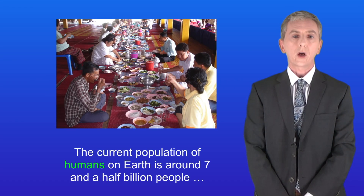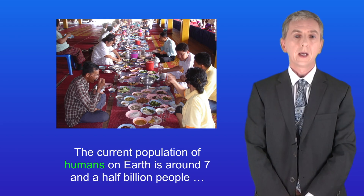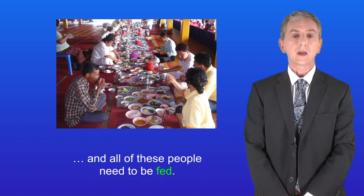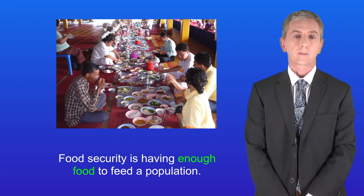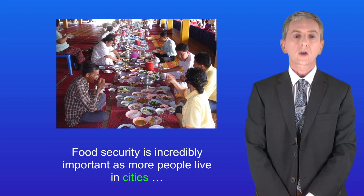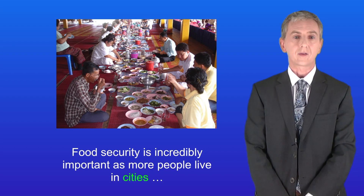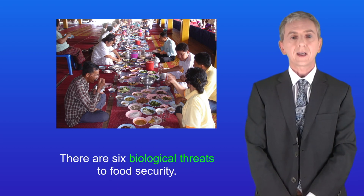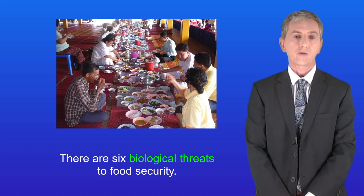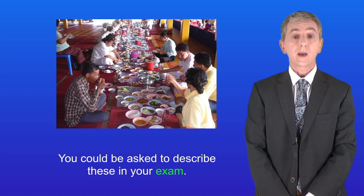The current population of humans on earth is around seven and a half billion people, and all of these people need to be fed. Food security is having enough food to feed a population. Food security is incredibly important as more people live in cities and fewer people grow their own food. There are six biological threats to food security and you could be asked to describe these in your exam.